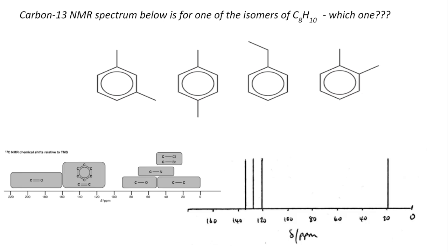We'll finish with a carbon-13 NMR spectrum for one of the isomers of C8H10, and we need to work out which one it is. Starting by looking at how many peaks there are and where they are: we've got one carbon-to-carbon environment. Straight away we can rule out one isomer because it has two carbon-to-carbon environments.